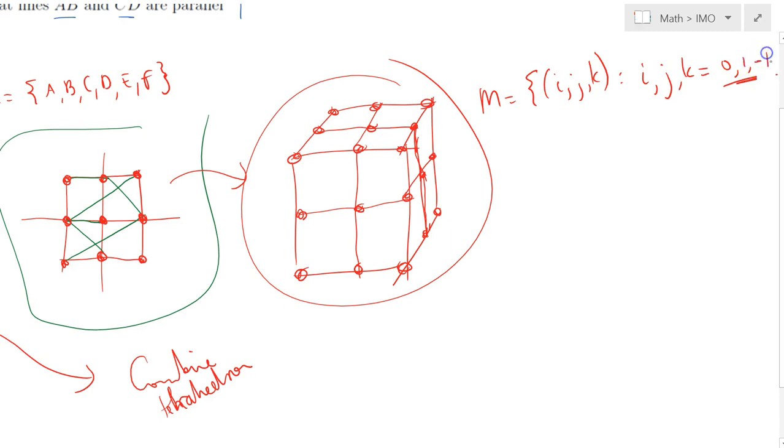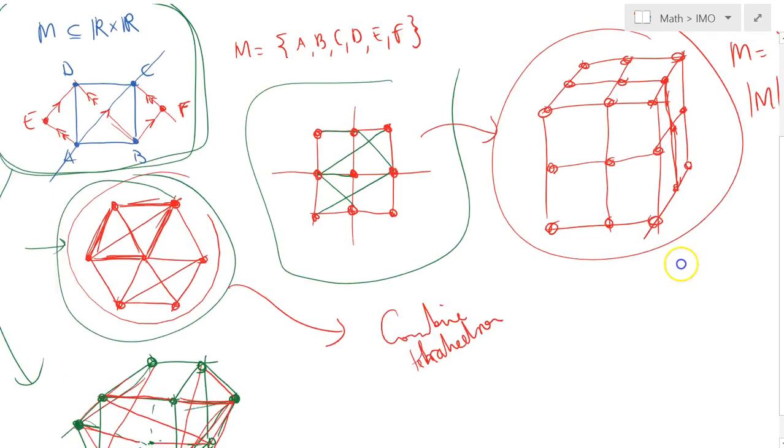For instance, (0,0,0), (0,0,1), (1,1,1), or (-1,-1,-1), all these points in 3D—that set would satisfy the condition.